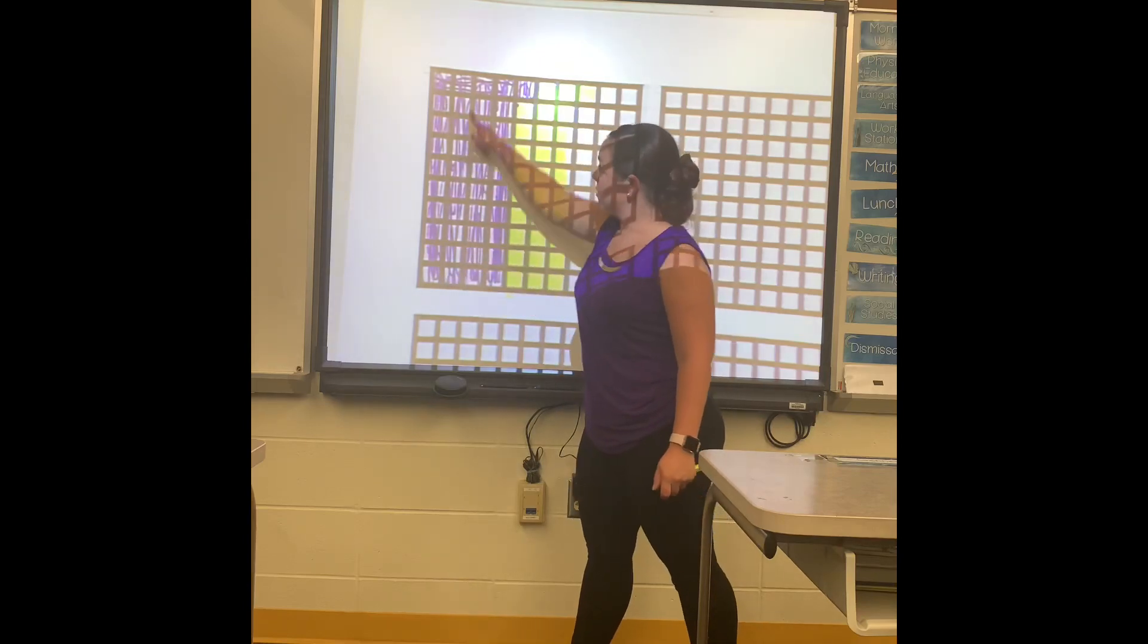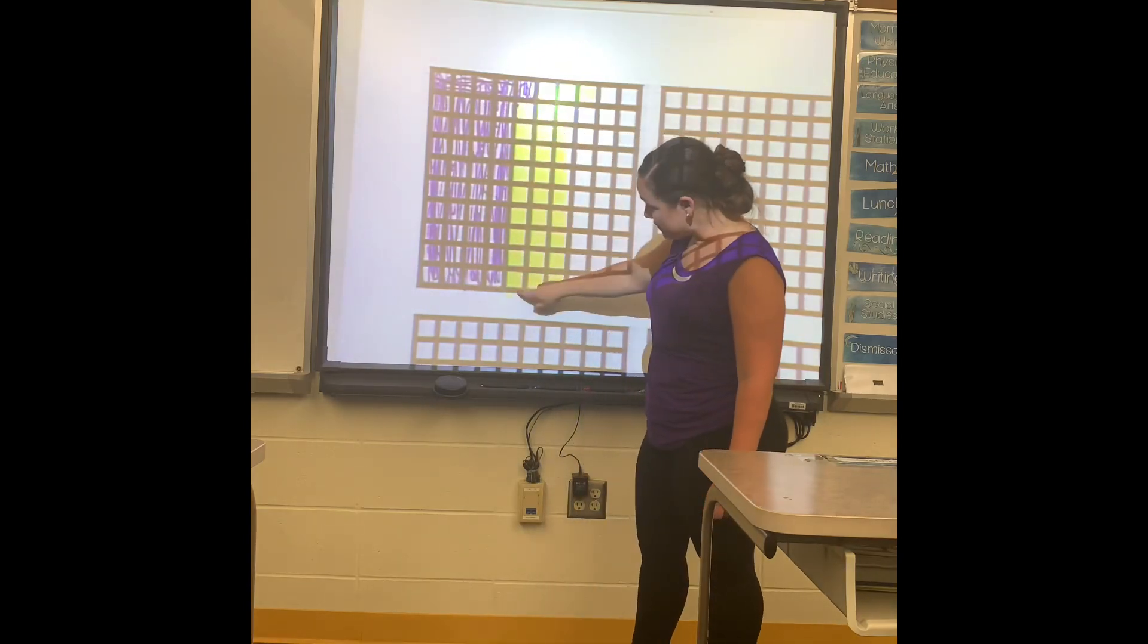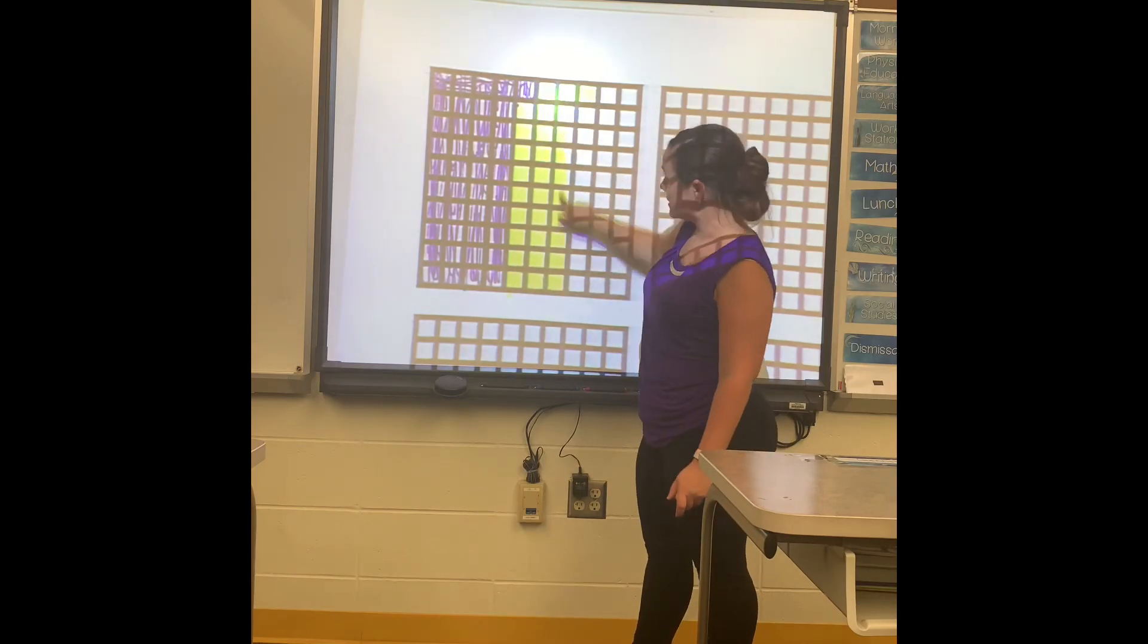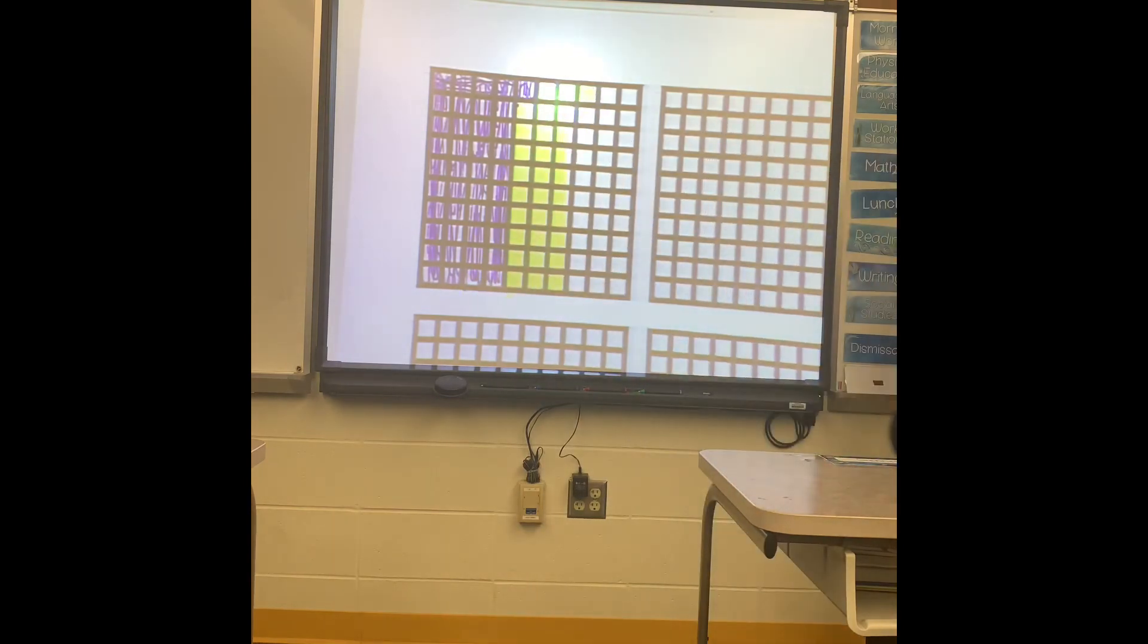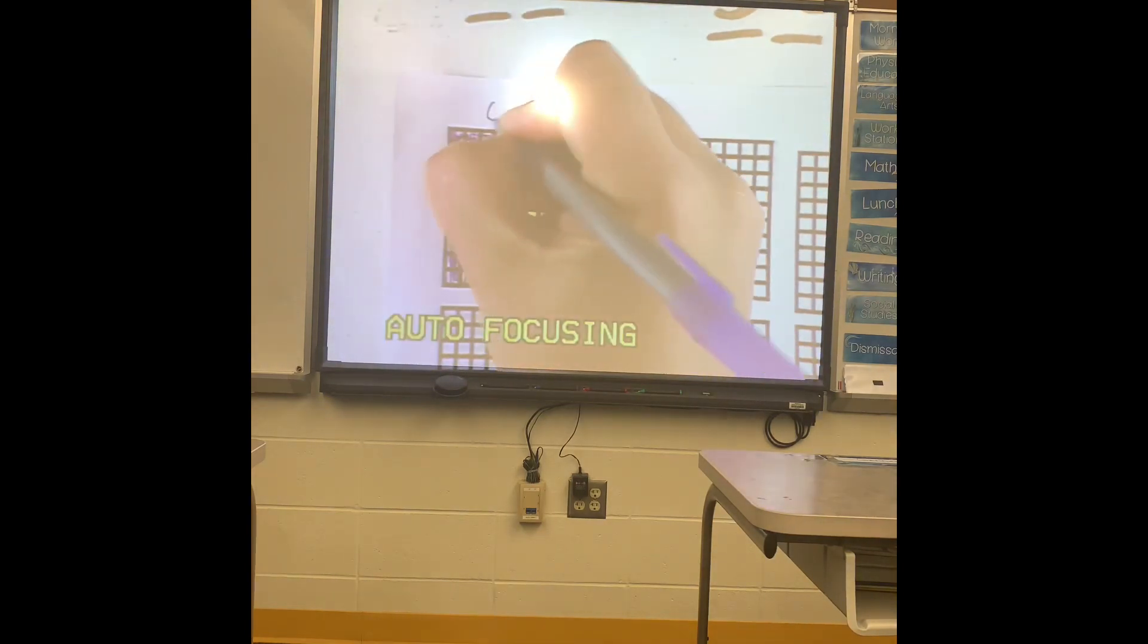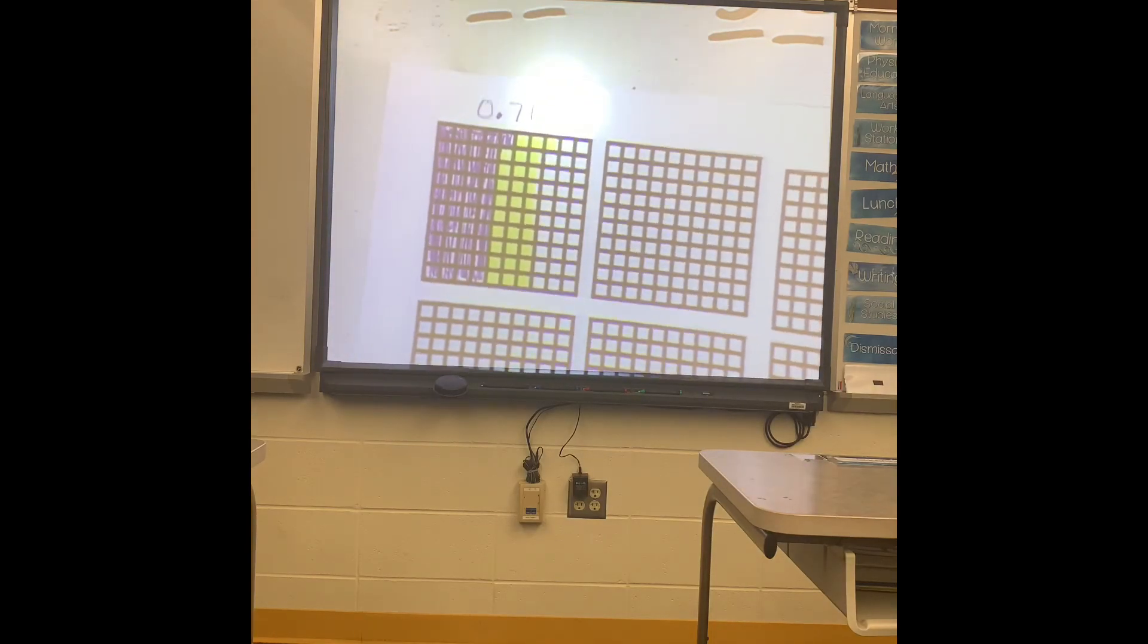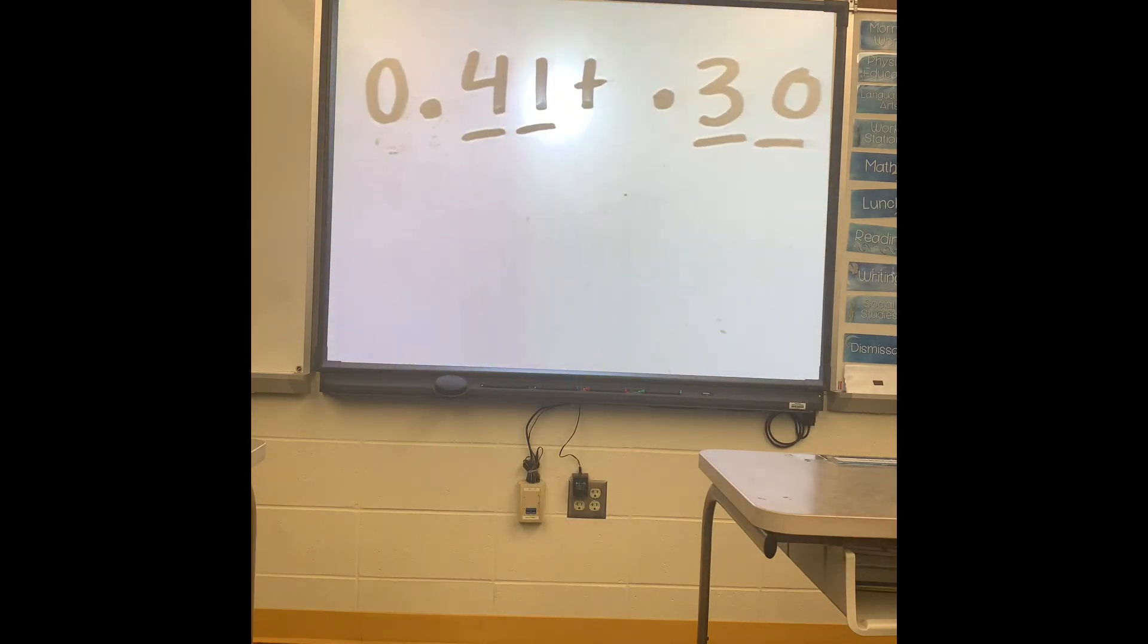So I have ten, twenty, thirty, forty, fifty, sixty, seventy, and one. So my answer for this problem is seventy-one hundredths. That's pretty easy when it's just two smaller numbers like that.